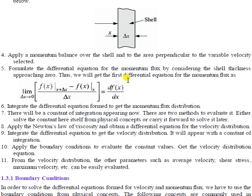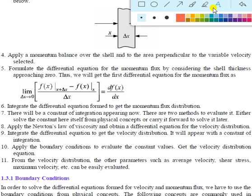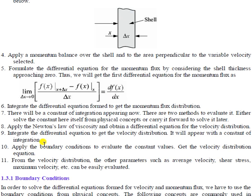Seventh, there will be a constant of integration appearing. There are two methods to evaluate it: either solve the constant from physical concepts right away, or carry it forward to solve it later. Eighth, apply Newton's law of viscosity to obtain a differential equation for the velocity distribution. Ninth, integrate that differential equation to get the velocity distribution, which will also appear with a constant of integration.